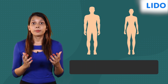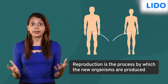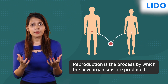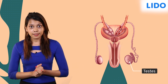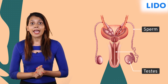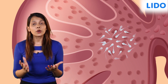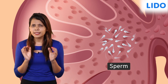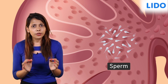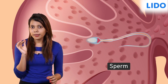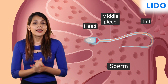New organisms are produced by the process of sexual reproduction. This involves the fusion of male and female gametes. The male reproductive system consists of a pair of testes, a pair of sperm ducts, and a penis. The testes produce millions of male gametes called sperms. A sperm is just a single cell and it's one of the smallest cells in our body. When viewed under the microscope, it has a tadpole-like appearance consisting of a head, a middle piece, and a tail.